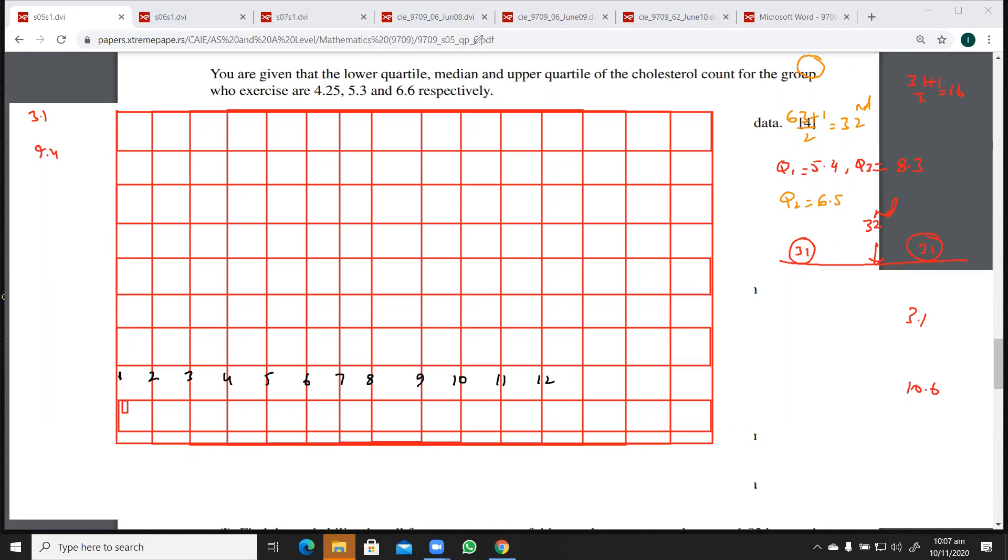And now let's start drawing it. I'll be drawing first of all for the people who exercise. This is starting from 3.1. Let me start from here, 3.1. And the median is, so the lower quartile is 4.25. 4.25 would be here. And the upper quartile is 6.6. This would be here. And the maximum value is 9.4. This is like this. So the end, the whiskers should end like this. And then I have to draw the box. The box start from the lower quartile, which is 4.25. I can draw the box like this. And this is going to go up to this. And then the median is at 5.3. So here is 5.3. Now this is for the one who exercise.